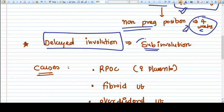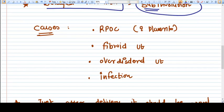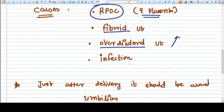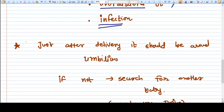It's also called sub-involution. The causes are RPOC, that means retained product of conception, placenta, fibroid uterus, over-distended uterus in case of large baby, twin pregnancy, and infection.